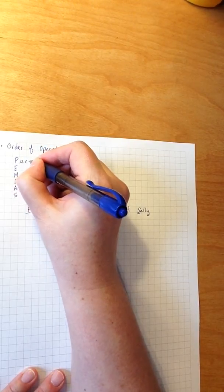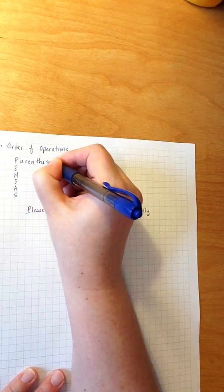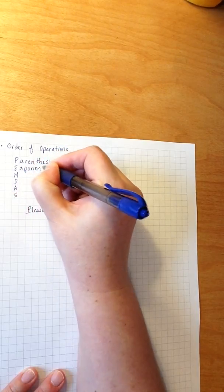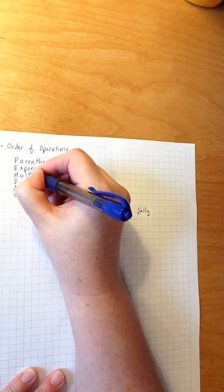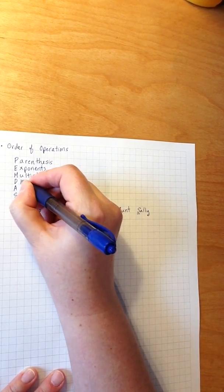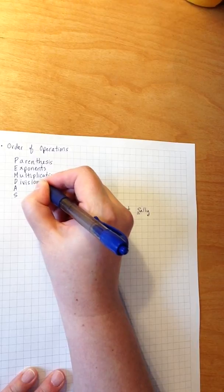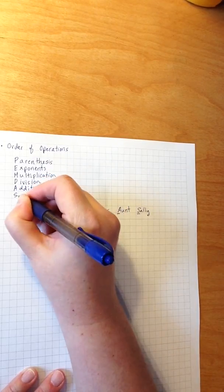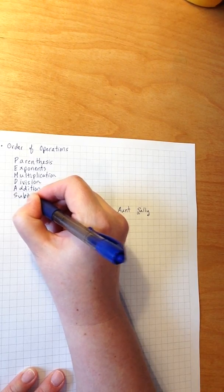The P stands for parenthesis, E for exponents, M for multiplication, D for division, A for addition, and S for subtraction.